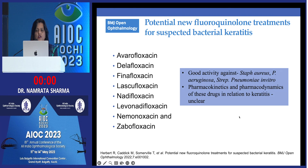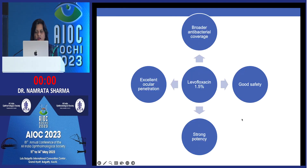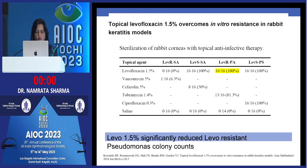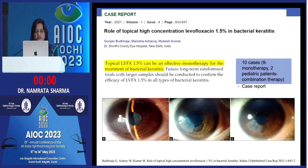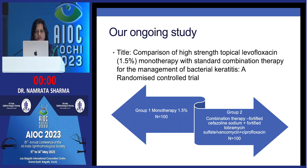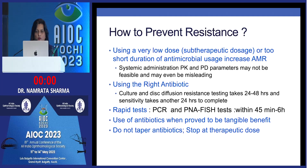Levofloxacin 1.5% is commercially available, concentrated, and has stronger potency — it does not need to be prepared in an ocular pharmacy. It significantly reduces colony counts, especially for Pseudomonas. We have an ongoing study comparing combination therapy versus levofloxacin in mild to moderate microbial keratitis in collaboration with LVPEI.